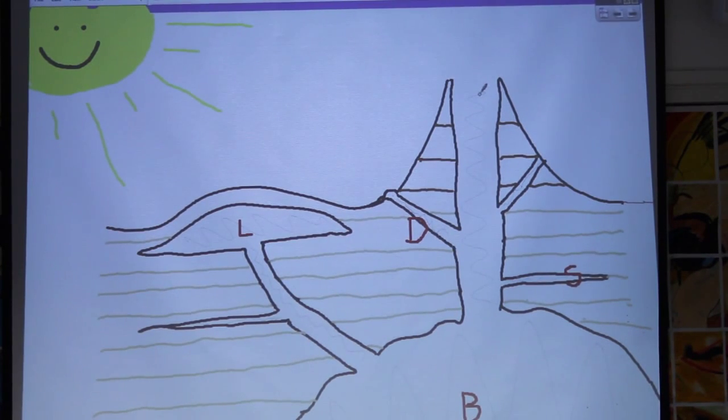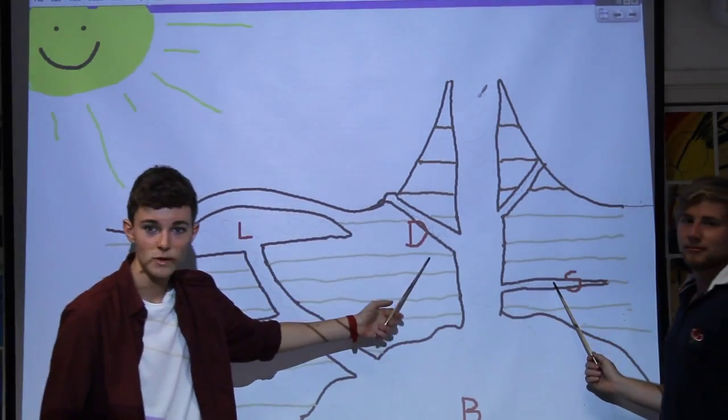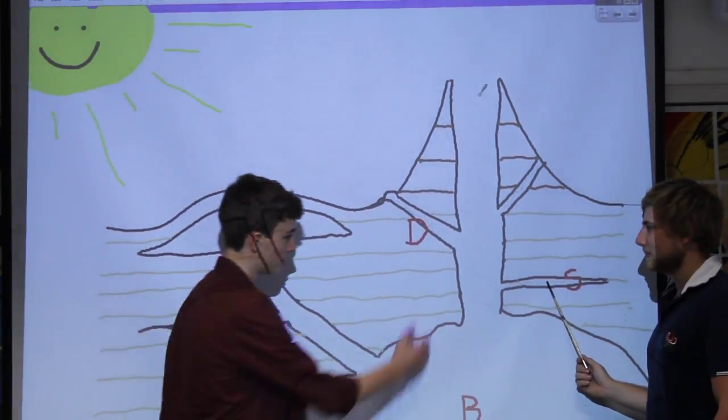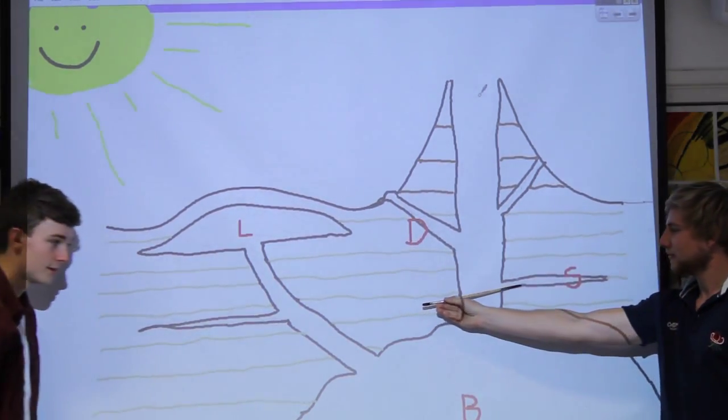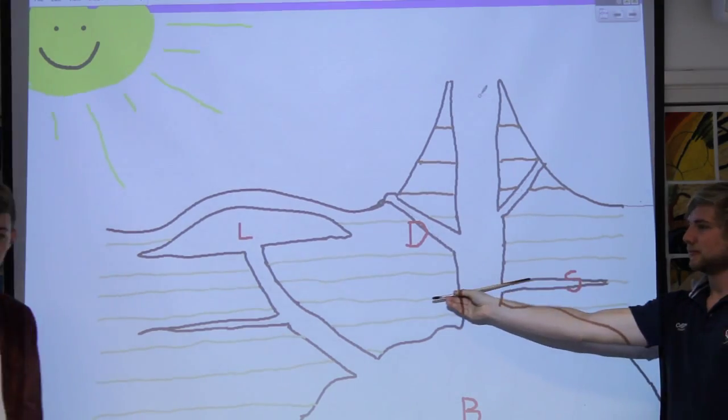There are two types of magma channels: dykes and sills. Dykes go against the sediment gradient, and sills slip in the gaps in between the sediment gradient.